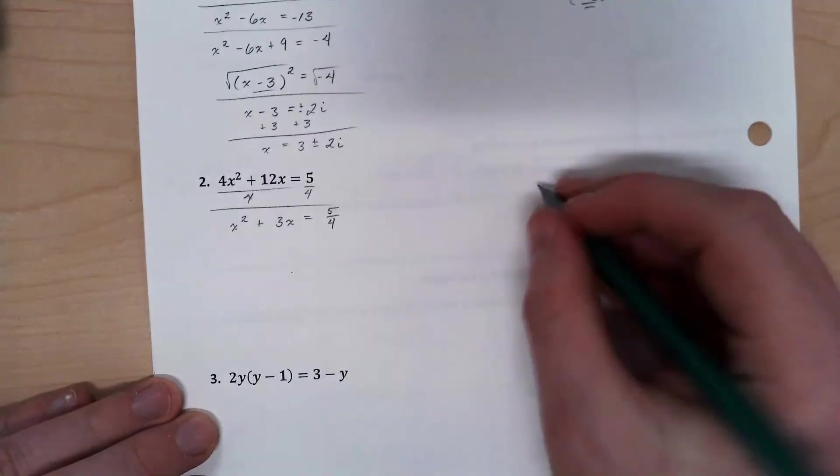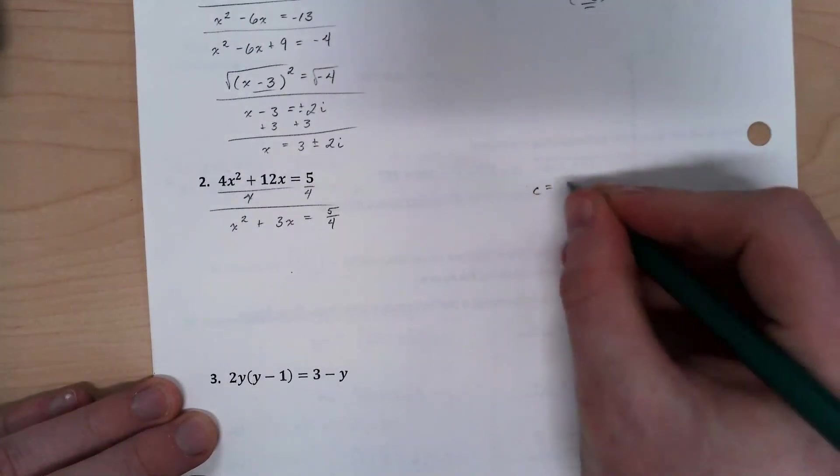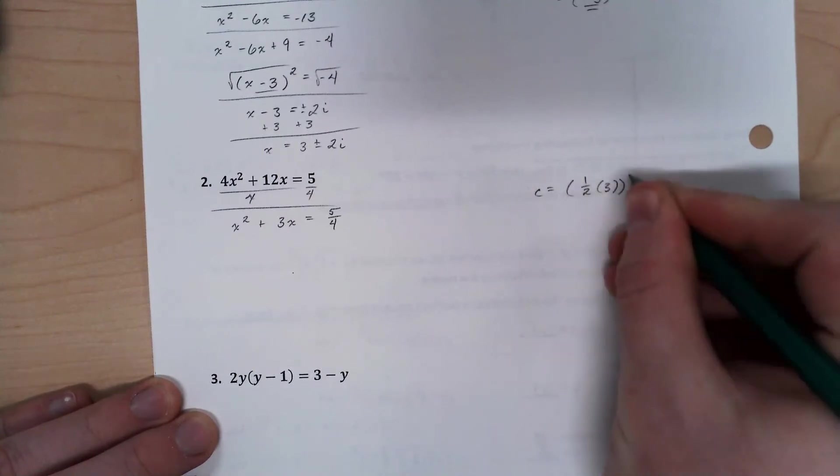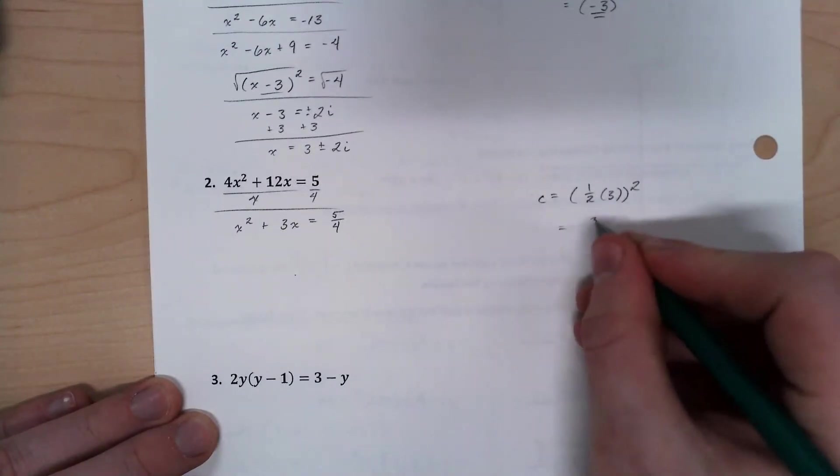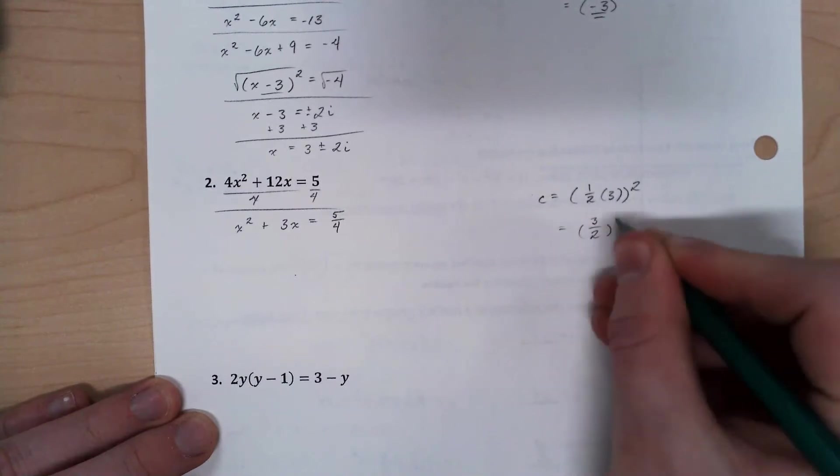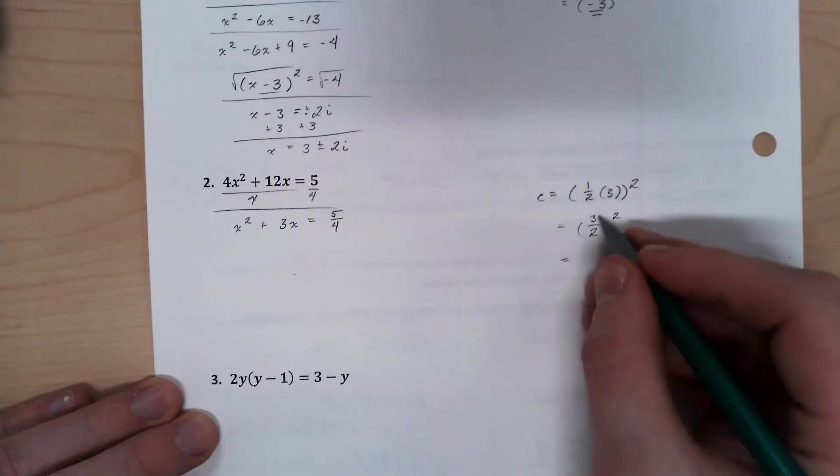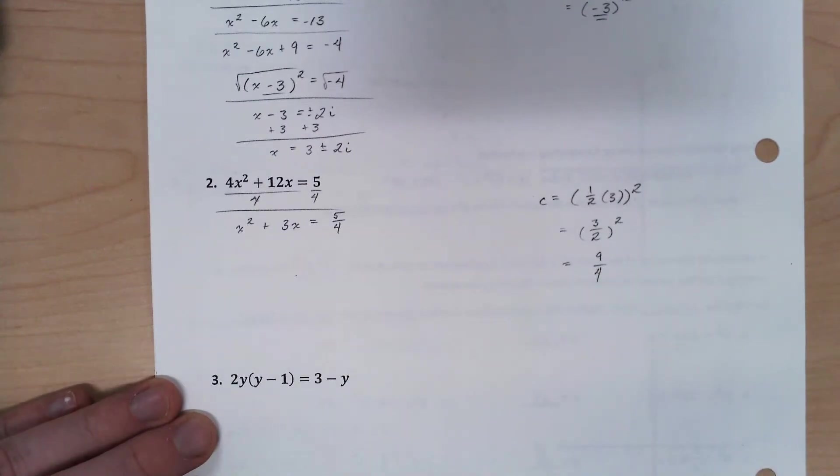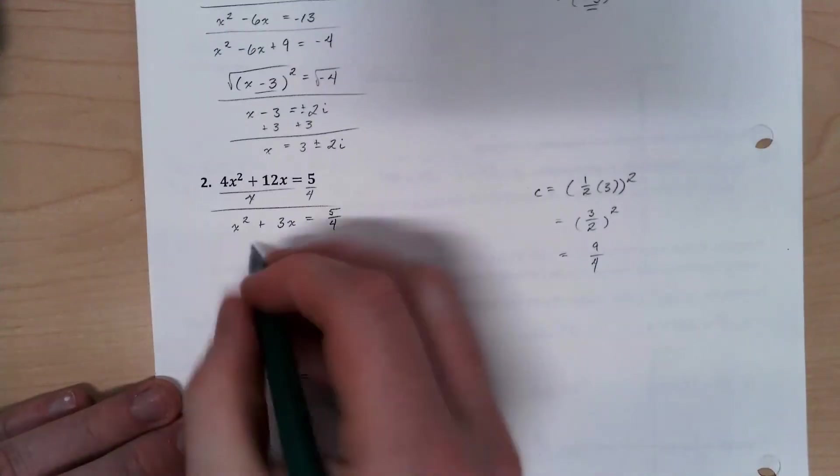So I'm going to take and find my c by saying one-half of 3 quantity squared. Well, one-half of 3 is 3 over 2. 3 squared is 9. 2 squared is 4. So 9 over 4 is what I'm going to add to both sides.